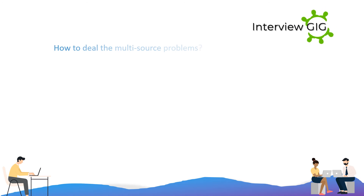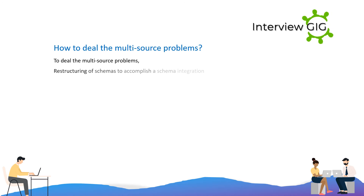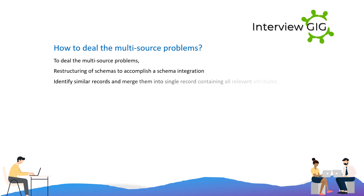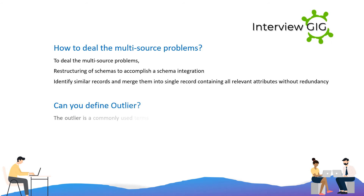How do you deal with multi-source problems? To deal with multi-source problems: restructure schemas to accomplish schema integration, and identify similar records and merge them into a single record containing all relevant attributes without redundancy.